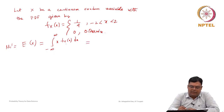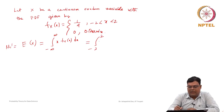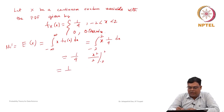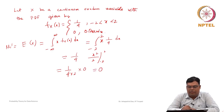Evaluating: (1/4)·[x²/2] from −2 to 2 = (1/4)·(4/2 − 4/2) = (1/4)·0 = 0. So the mean is 0, which makes sense by symmetry of the uniform distribution on (−2, 2).